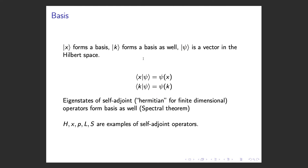Ultimately, the more fundamental object is the quantum state — the ket vector, which is a vector in the Hilbert space. The wave functions are merely components when you project this quantum state onto its bases.